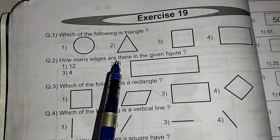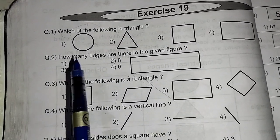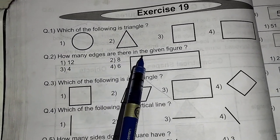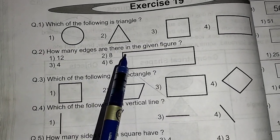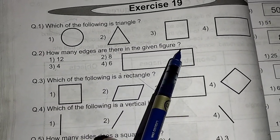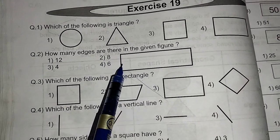Question number two, how many edges are there in the given figure? In the given figure, the easy figure, easy shape, how many edges are there? One, two, three, four. So option number three is the right answer.